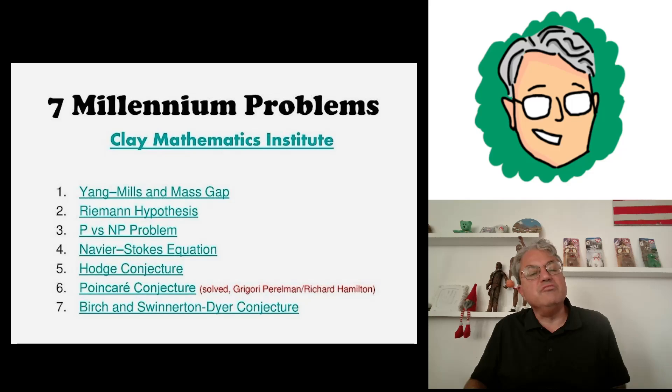The first one is called the Yang-Mills and Mass Gap Problem. It's a problem with important applications in high-energy physics. What it basically says is that in quantum field theory, every version of quantum field theory, there's a mass gap, which means that there's a particle of minimum possible mass in that theory. So that has important applications for physics, obviously.